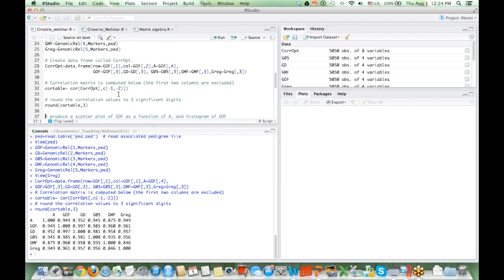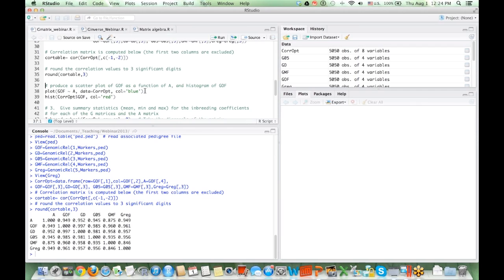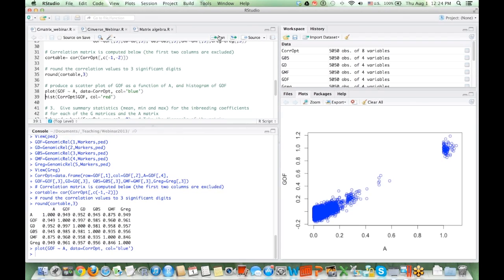So we can plot, like, GOF and A. That shows how strong those two methods are correlated. This plot, or correlations includes both diagonal inbreeding coefficients and off-diagonal elements.